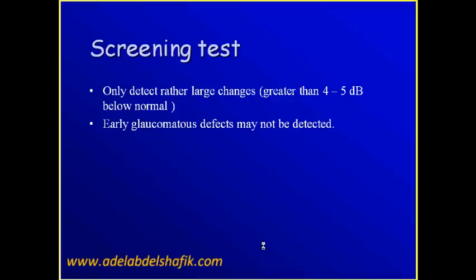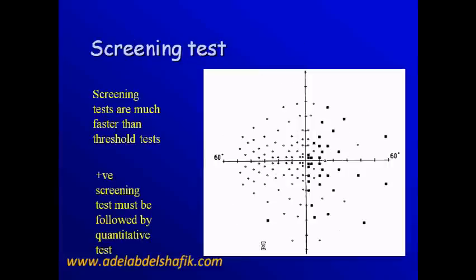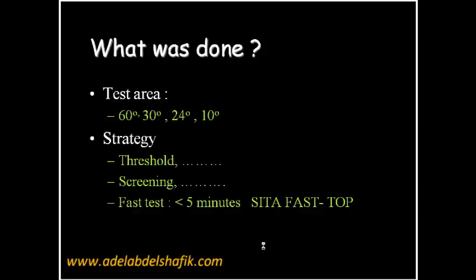Screening, as the name suggests, its value is just to screen if there is a defect or not. But if you are dealing with a patient with glaucoma, you need numbers to deal with, to follow the patient, to classify the amount of damage. So screening is quite fast, but if you get defects then you have to repeat the test with numbers. So this is the first point in WONDER - to check the test area and to check the strategy being done.